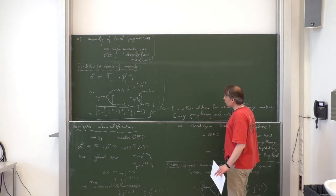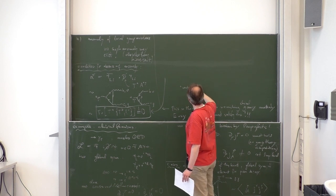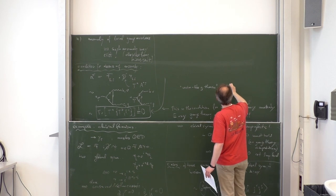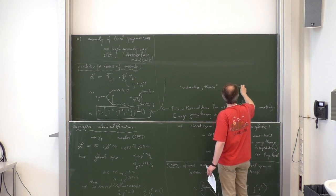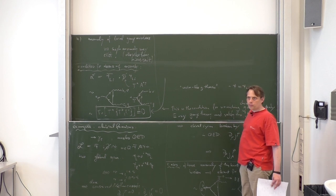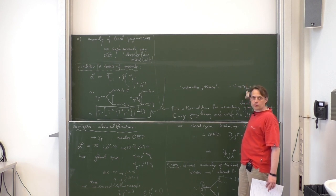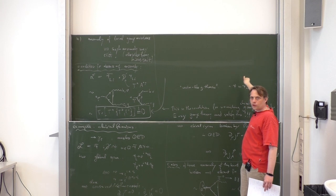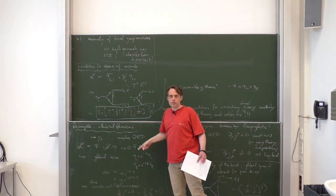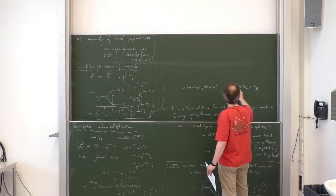Let me stress again: there is the notion of vector-like gauge theories. They couple only full spinors ψ = ψ_L + ψ_R, like QED or QCD. If you have that, then for each left-handed fermion there is a right-handed fermion with the same charge. If you convert a right-handed fermion into a left-handed anti-fermion, it has the opposite charge, and therefore there is automatically a zero here because each term has a negative counterpart. So these are automatically anomaly-free.